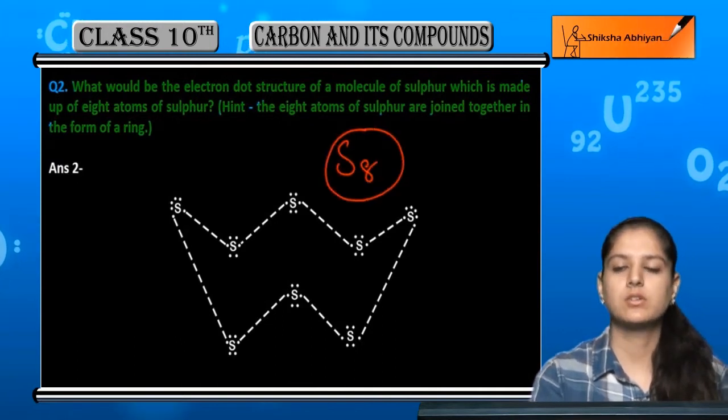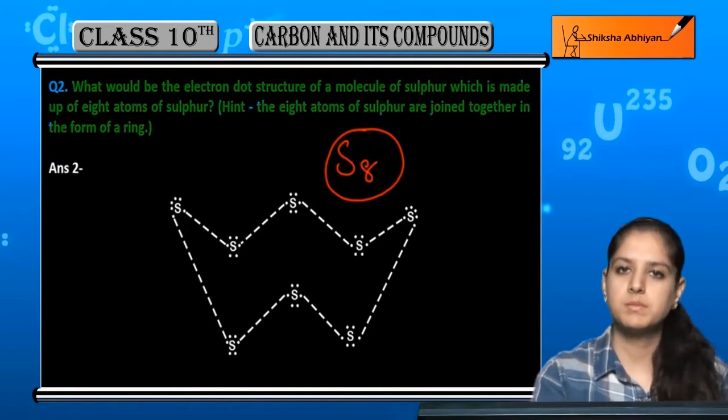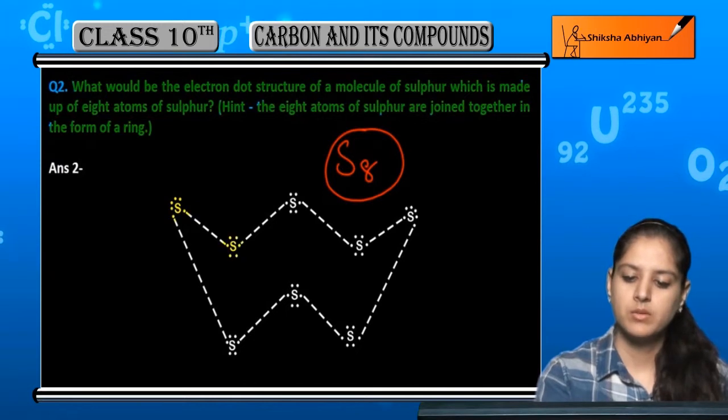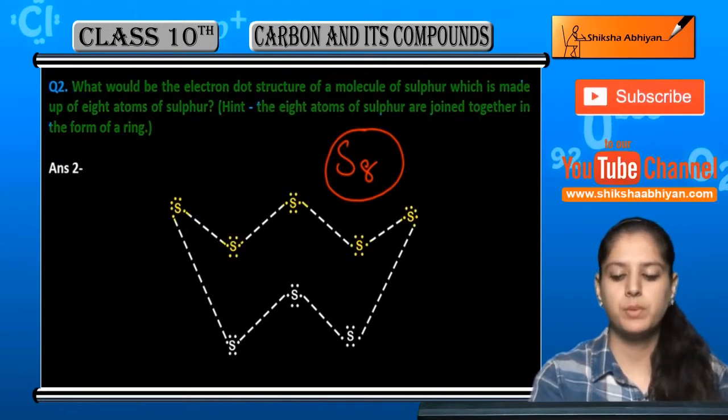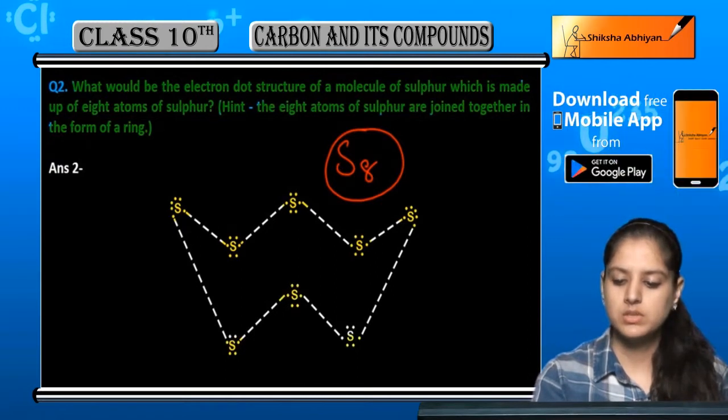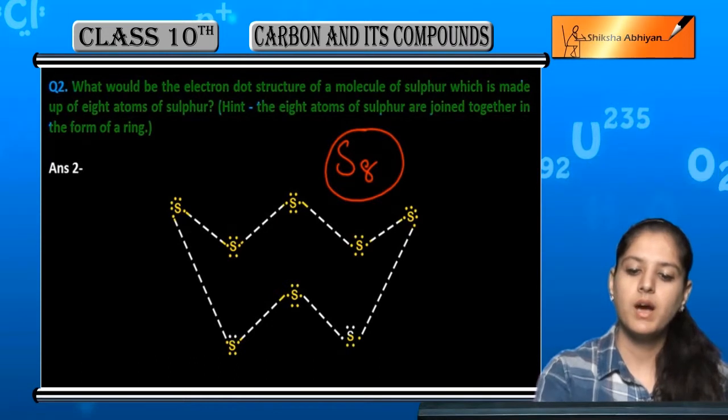So humne eight sulfur atoms pehle draw ki hai. Pehle likh hai one, two, three, four, five upar aur one, two, three niche - ek W ke form. Fine.